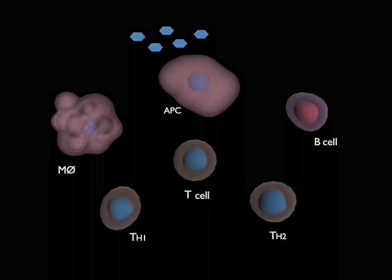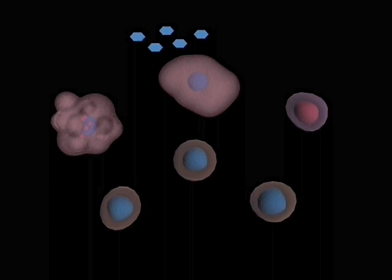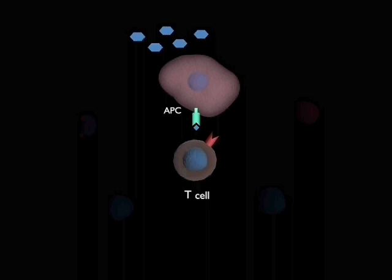The immune system consists of several diverse elements that interact to counteract pathogens and cope with the antigens they express. Antigens are taken up by antigen-presenting cells, which process the antigen and present it to T cells.